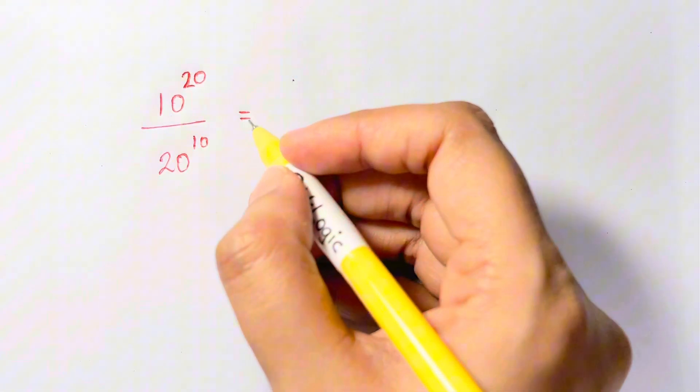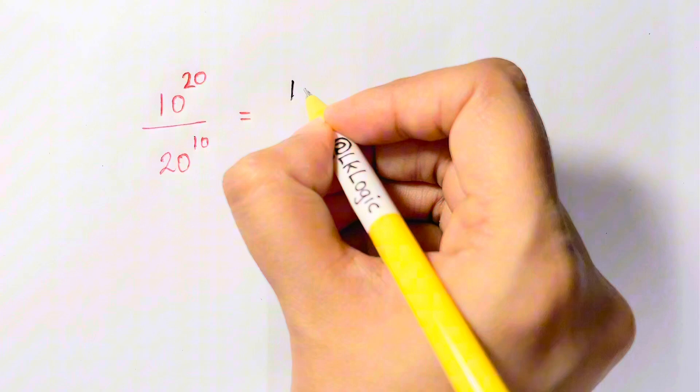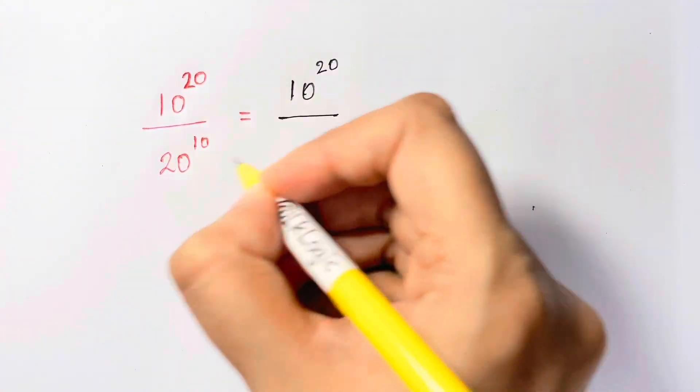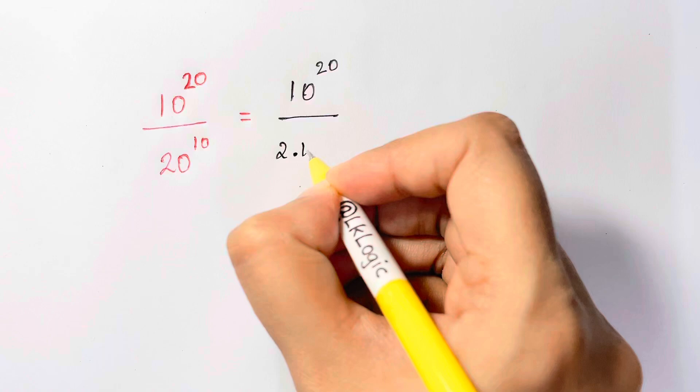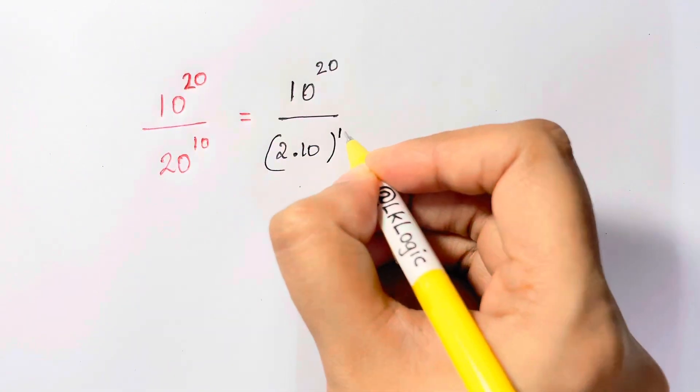So first step what we are going to do here is, let's write down 10 to the power of 20 and 20 can be written as 2 times 10 whole to the power of 10.